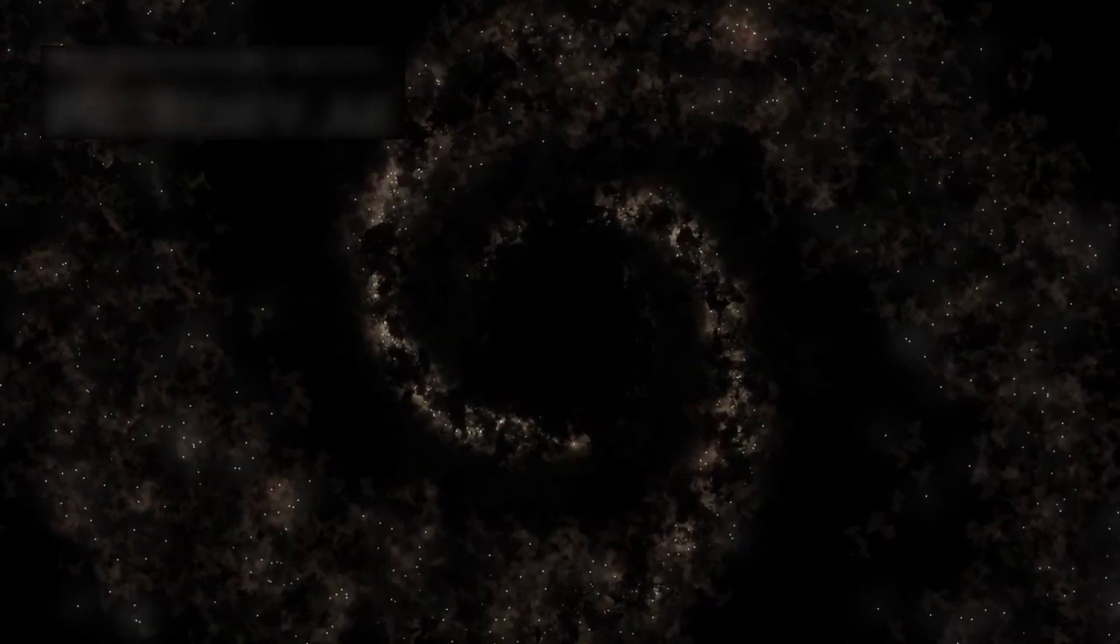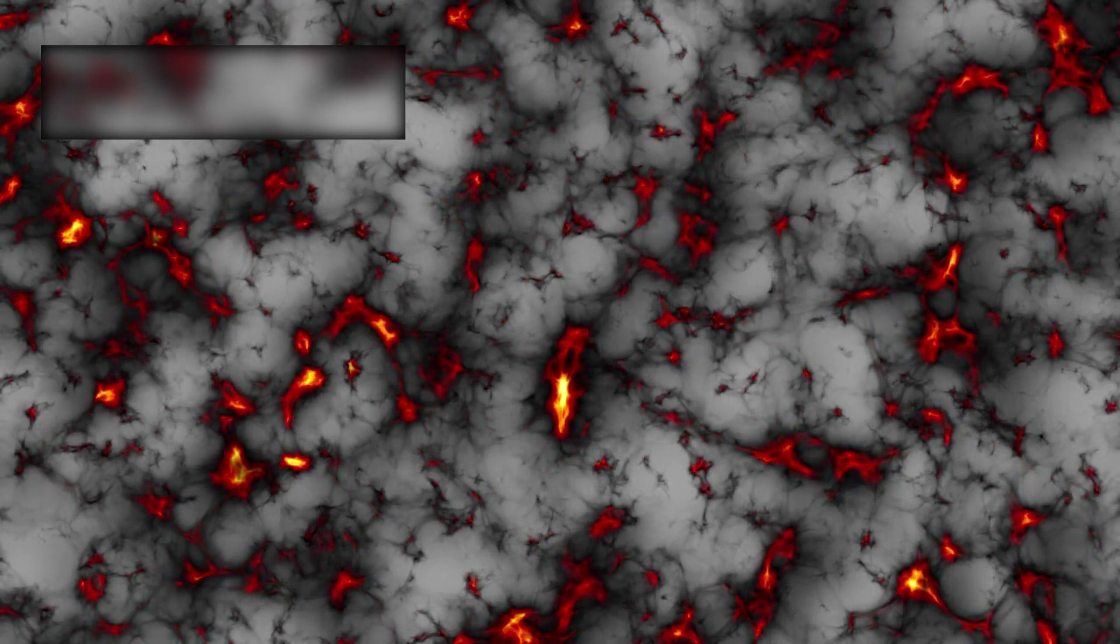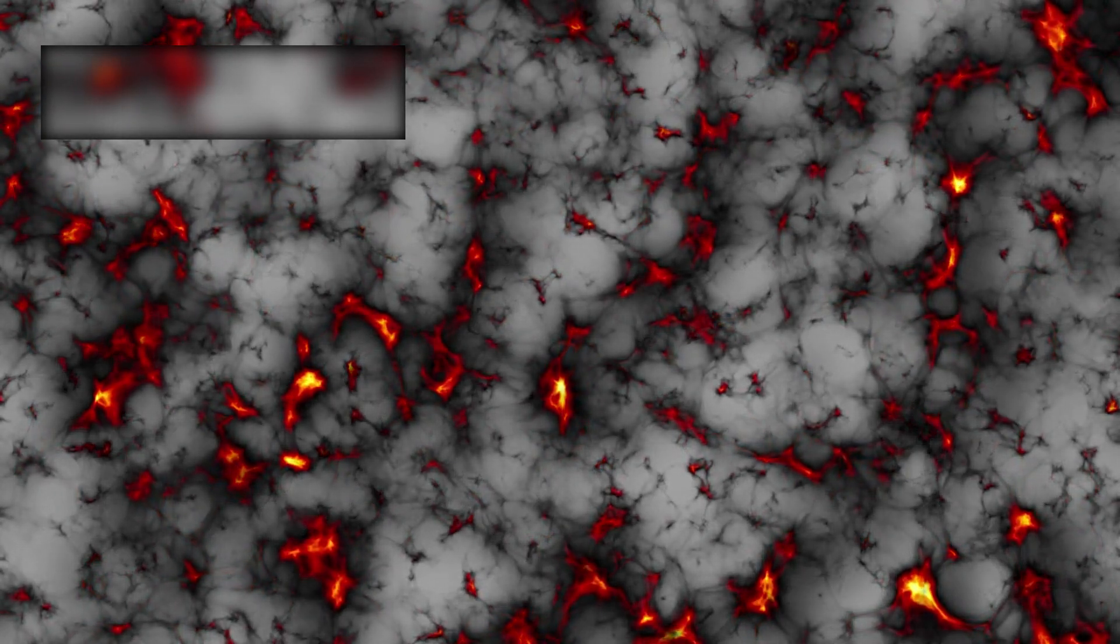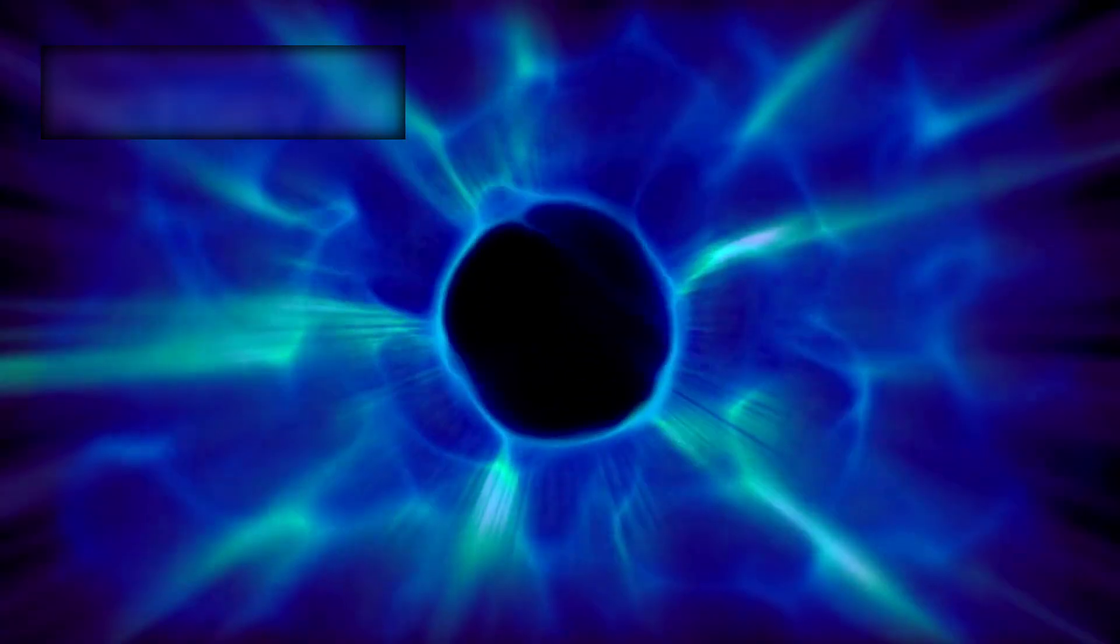Dark matter is invisible. It neither emits nor absorbs light, yet its gravitational pull shapes galaxies and binds them together. Without dark matter, the stars at the edges of galaxies would fly apart. Its presence is inferred through gravitational lensing, where the gravity of unseen matter bends the light of distant galaxies like a cosmic magnifying glass. And yet, despite decades of searching, no one has ever directly detected a dark matter particle.